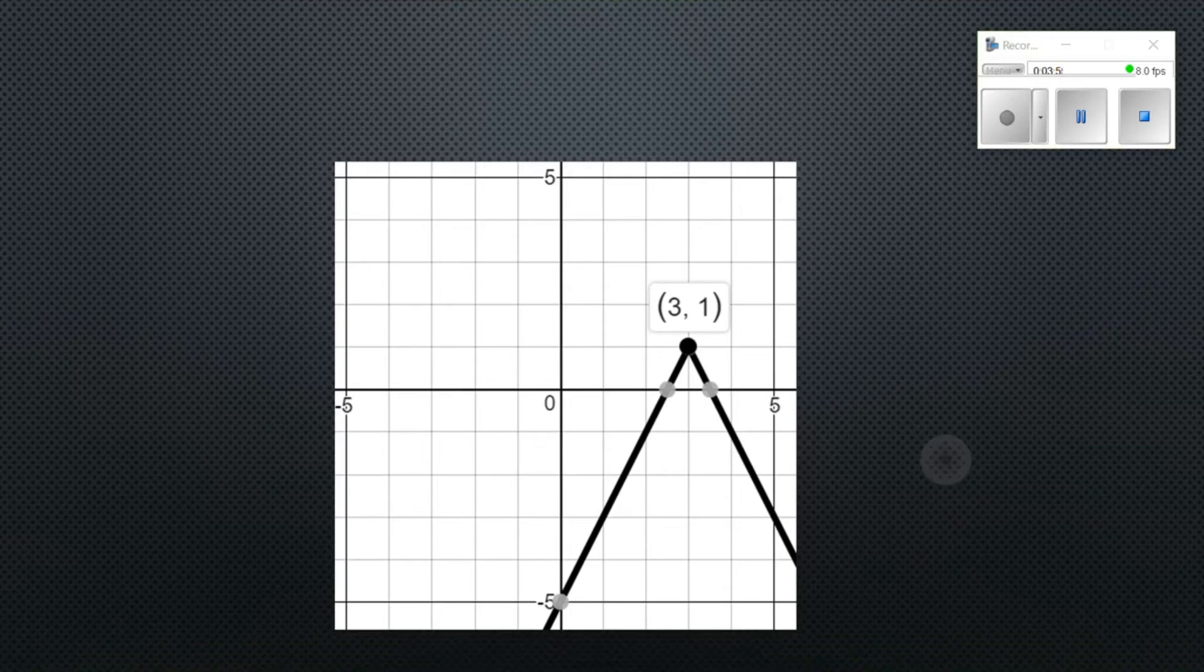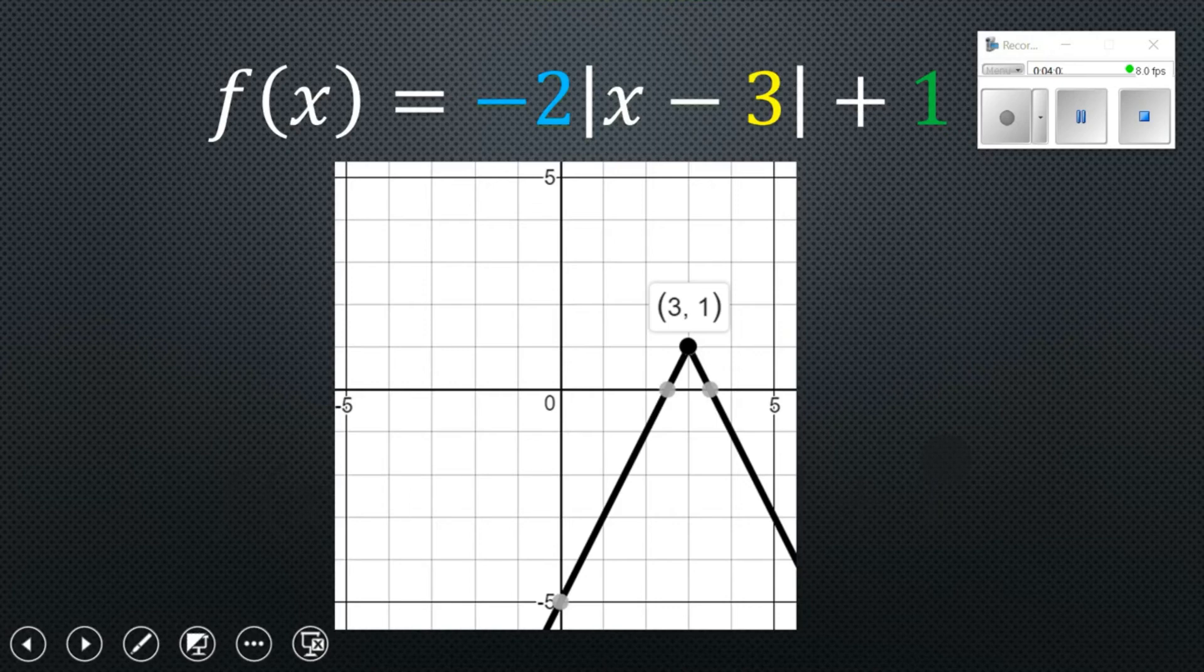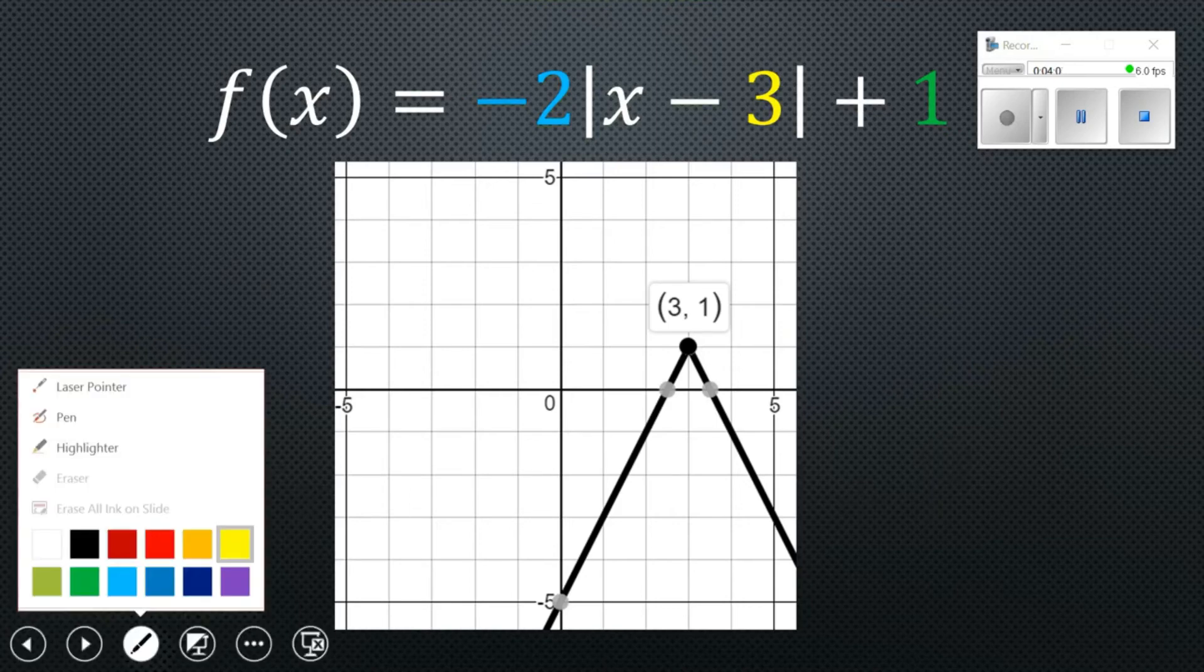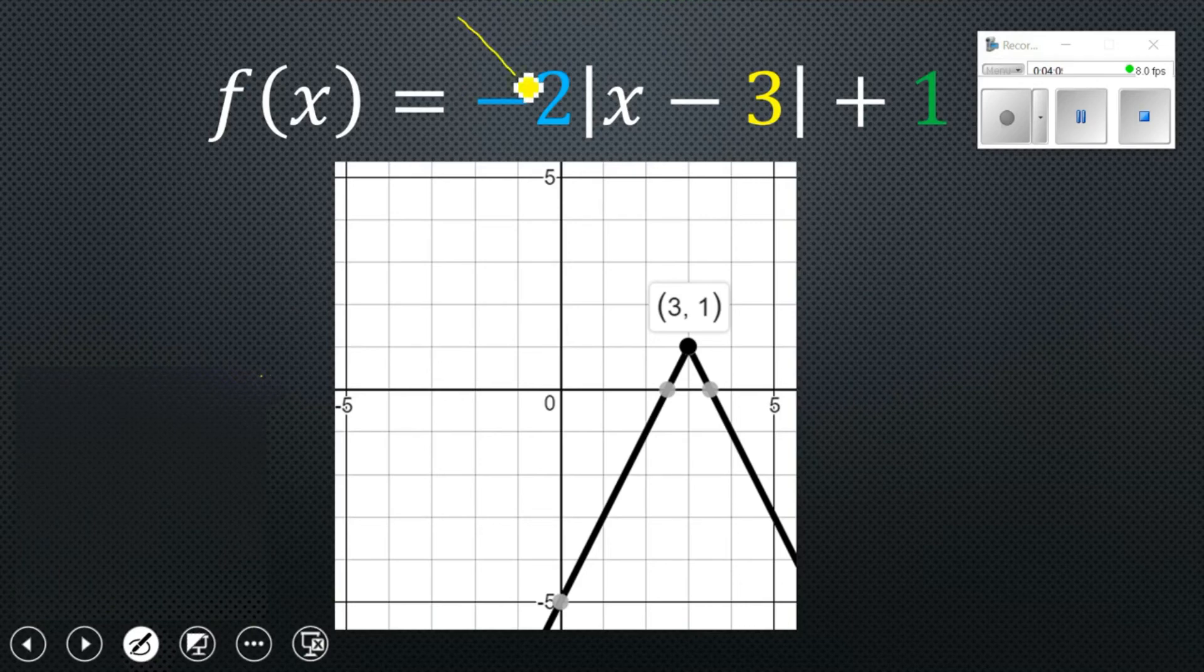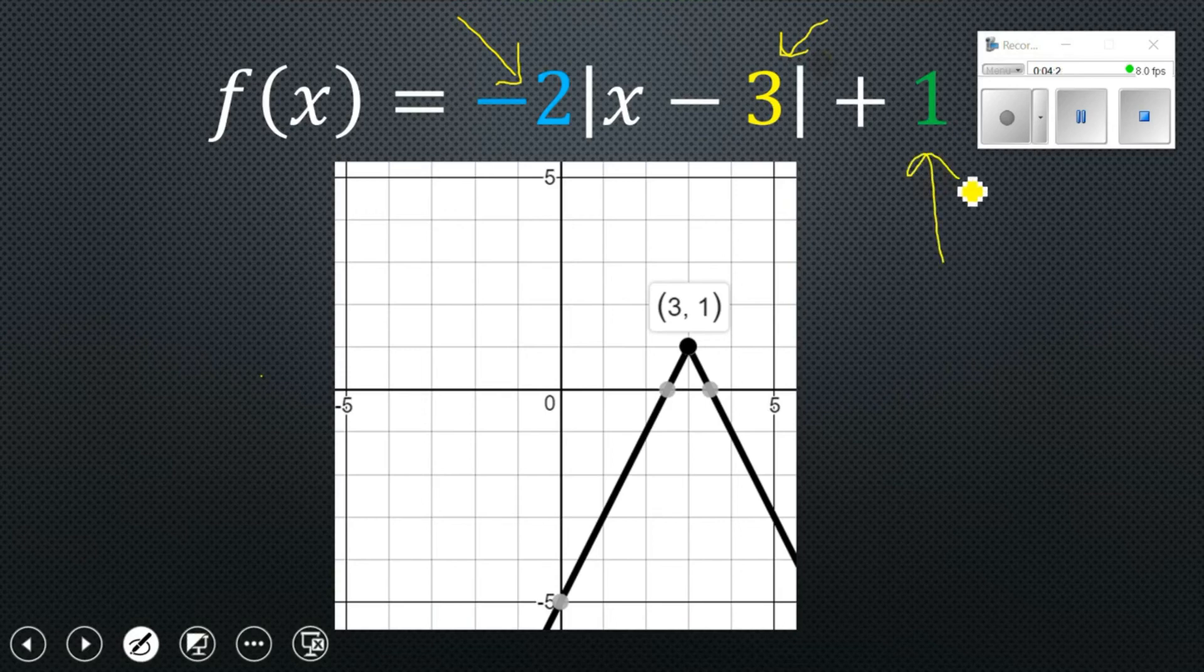Well the first piece that we're going to need is the a value and of course our k and h. So notice here the negative out front flips it upside down and the 2 is going to make it a little bit skinnier than the parent function, but not much. And then our minus 3, as we talked about, is the opposite of what you think. It's going to move it right 3 units. And then finally the plus 1 on the end gives us our movement upwards by 1.